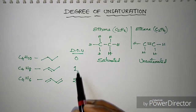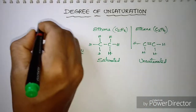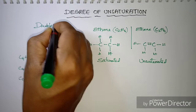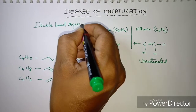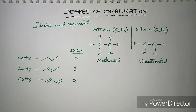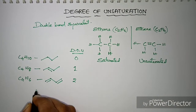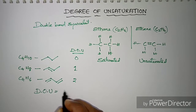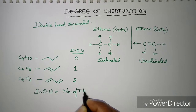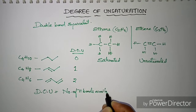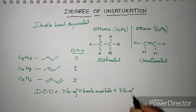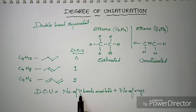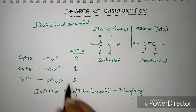Degree of unsaturation is otherwise also called double bond equivalent. Degree of unsaturation is calculated by the number of pi bonds available plus the number of rings. The sum of number of pi bonds plus number of rings gives the degree of unsaturation. Now that we've covered pi bonds, let's try an example with a ring structure — benzene.